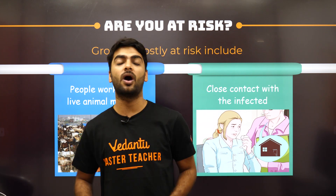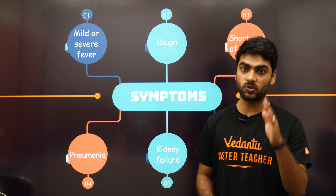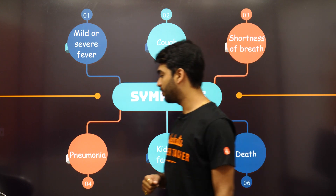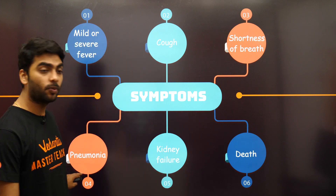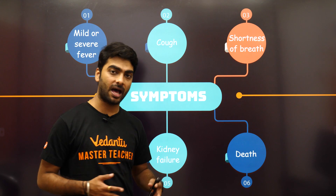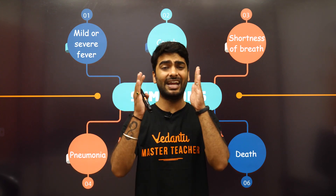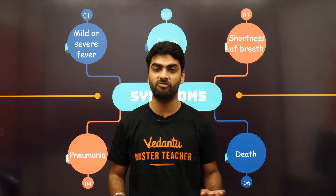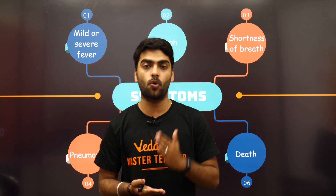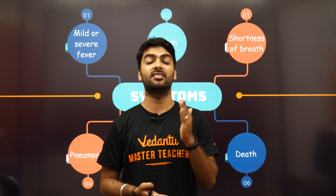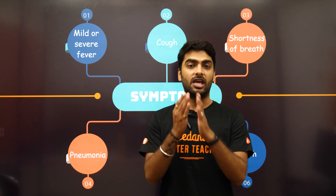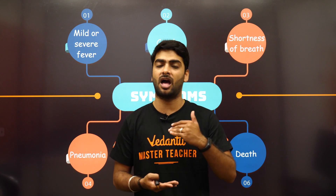What are the symptoms if you have got the virus? They include mild or severe fever, cough, shortness of breath, pneumonia, kidney failure, and death. These are the major symptoms of a person infected by the virus. All this information is directly taken from the World Health Organization website, so it is completely authentic. Please don't trust random news articles — visit who.int for accurate information.